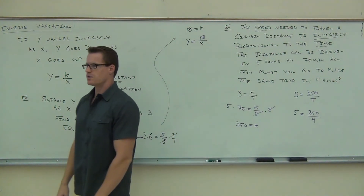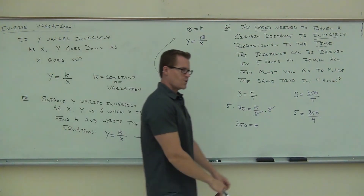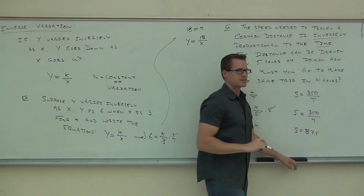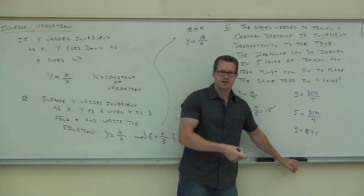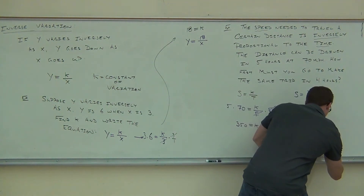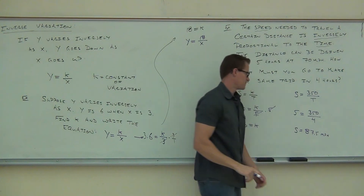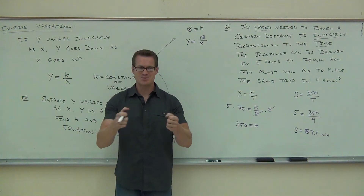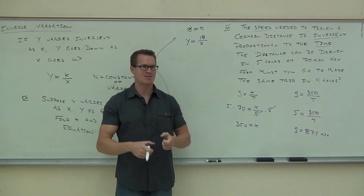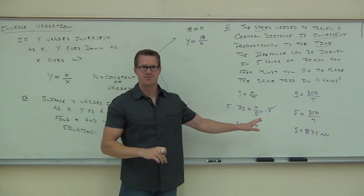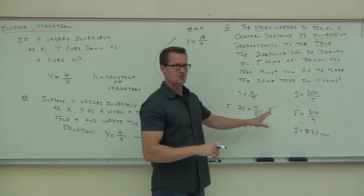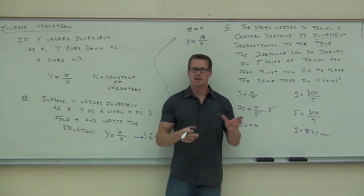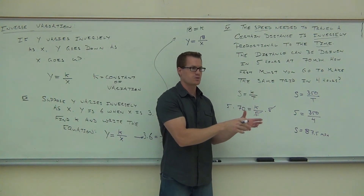What is 350 divided by four? 87.5. 87.5 — what? Yeah, it's not a radio station — this is miles per hour. And remember, that's an average speed. So chances are, if you hit traffic, you're going to have to go even faster. I don't want to get sued for telling you to go 87.5 miles an hour, okay? But that's how fast you would have to go to make that same trip in four hours versus five.